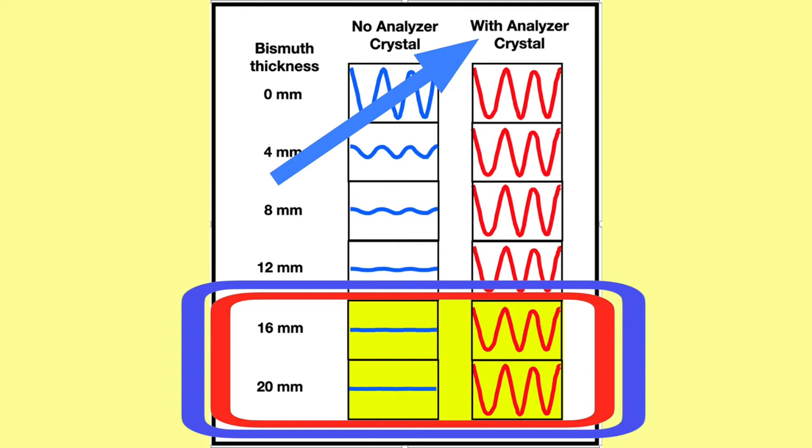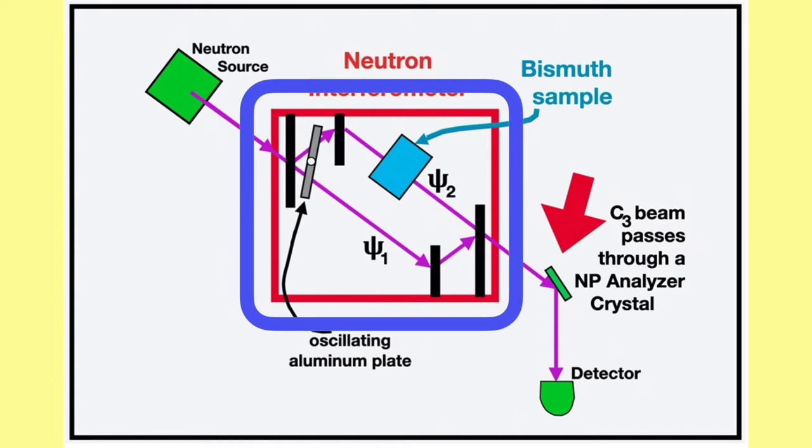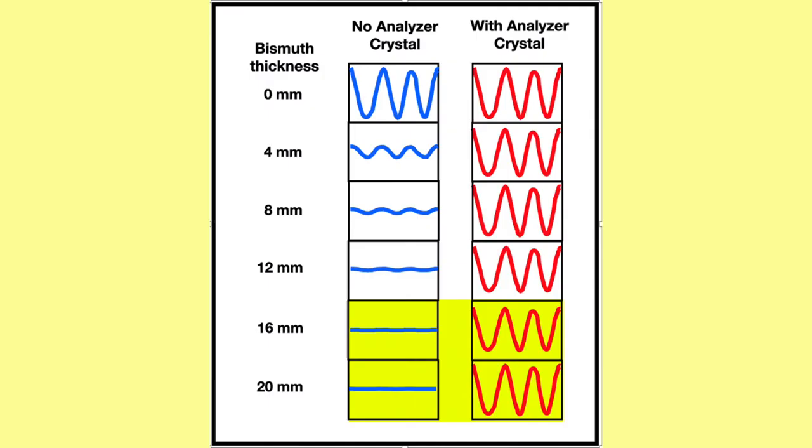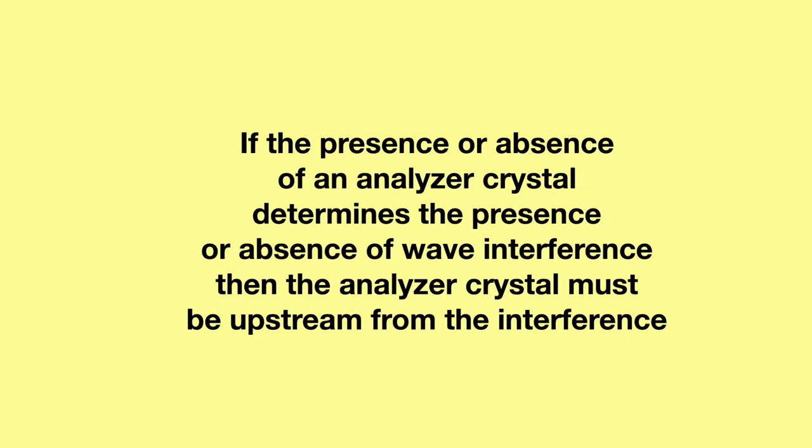It turned out to their astonishment that when they put that analyzer crystal outside, downstream from the interferometer, it restored robust interference, tall sine waves, throughout the data set. No matter how much bismuth they used, even a full sample of 20 millimeters, they had huge sine waves, and they said that they could not explain this data because what could an analyzer crystal outside and downstream from the interferometer do to the interference upstream? It couldn't do anything logically, and yet, in fact, it had a huge impact. They invoked something called Wheeler's Smoky Dragon to explain why they could not explain this data.